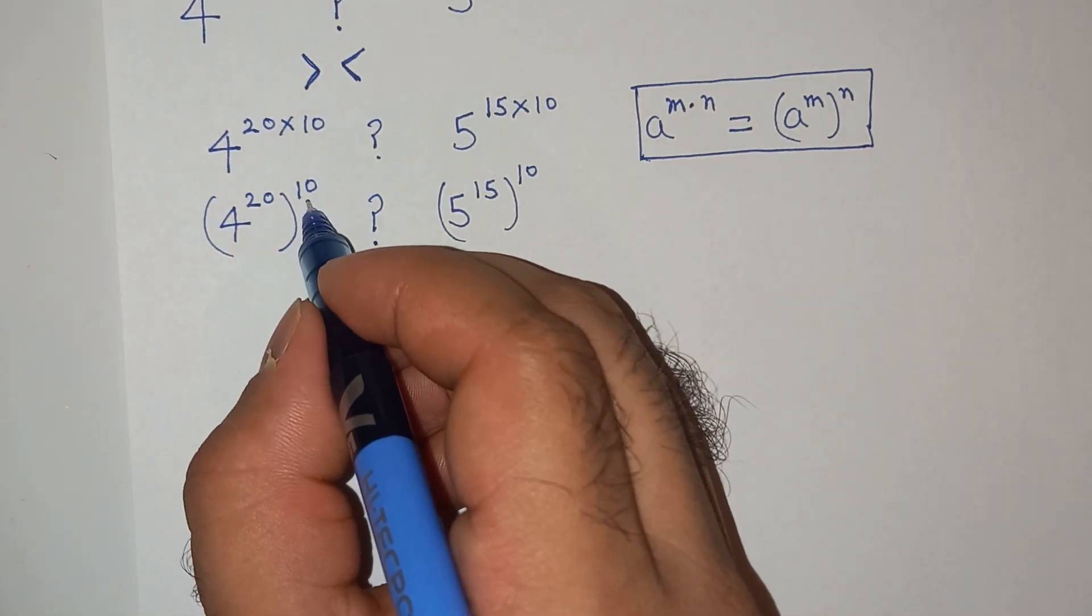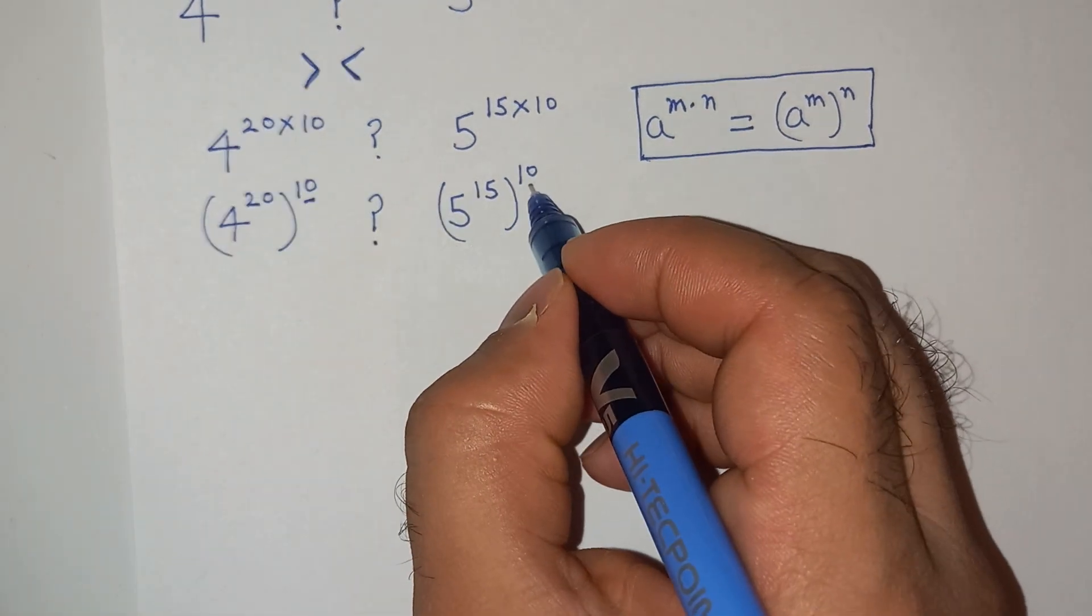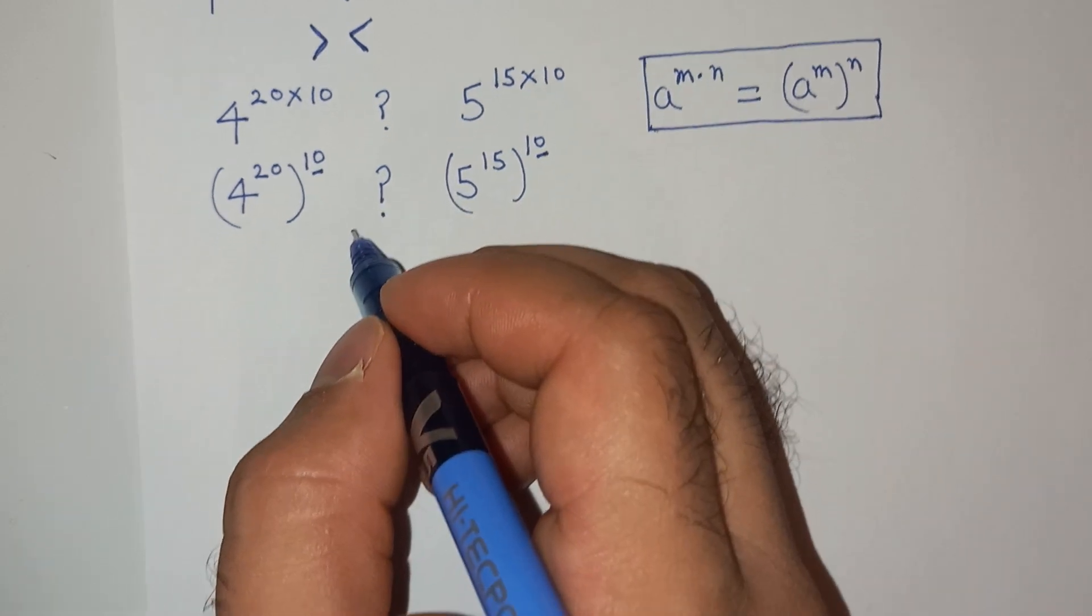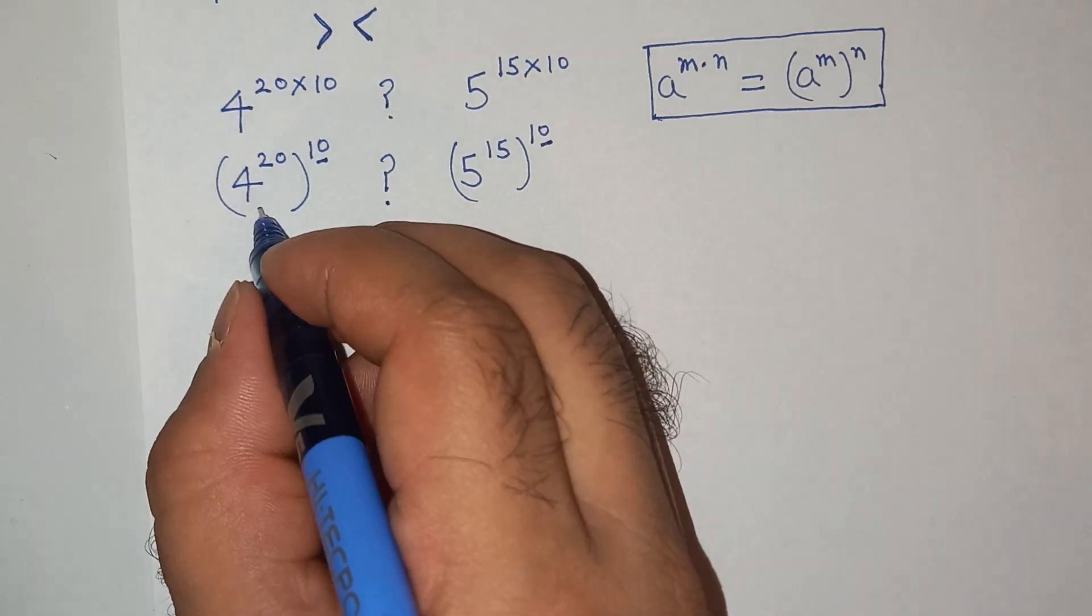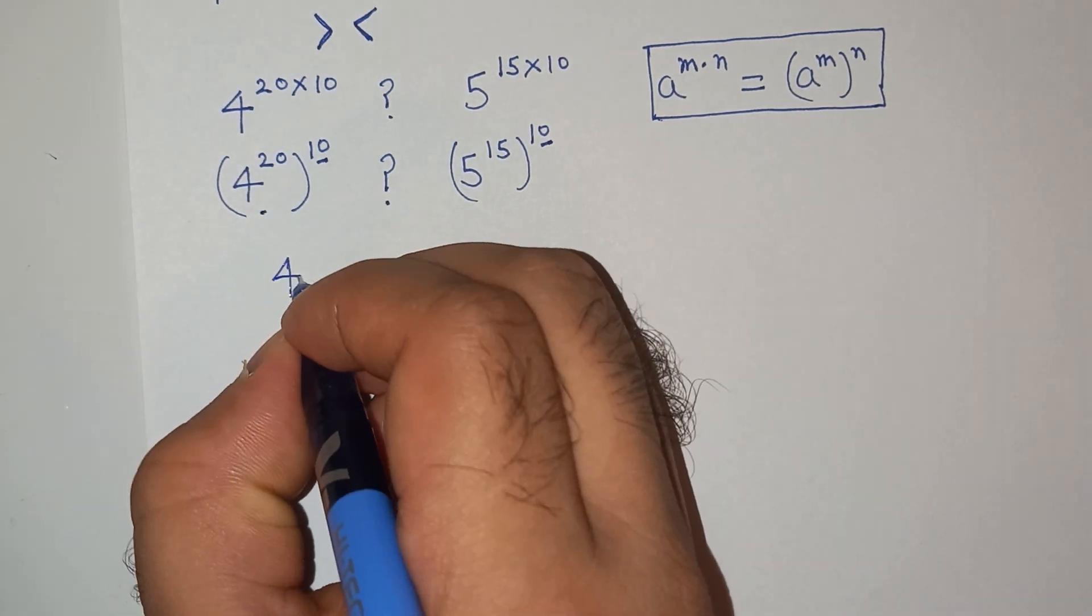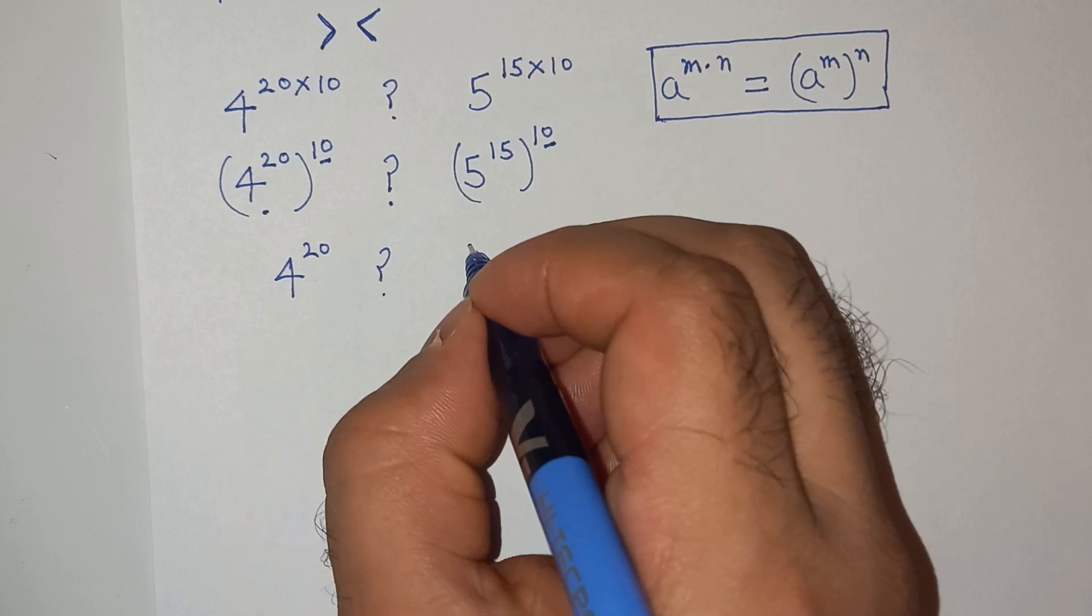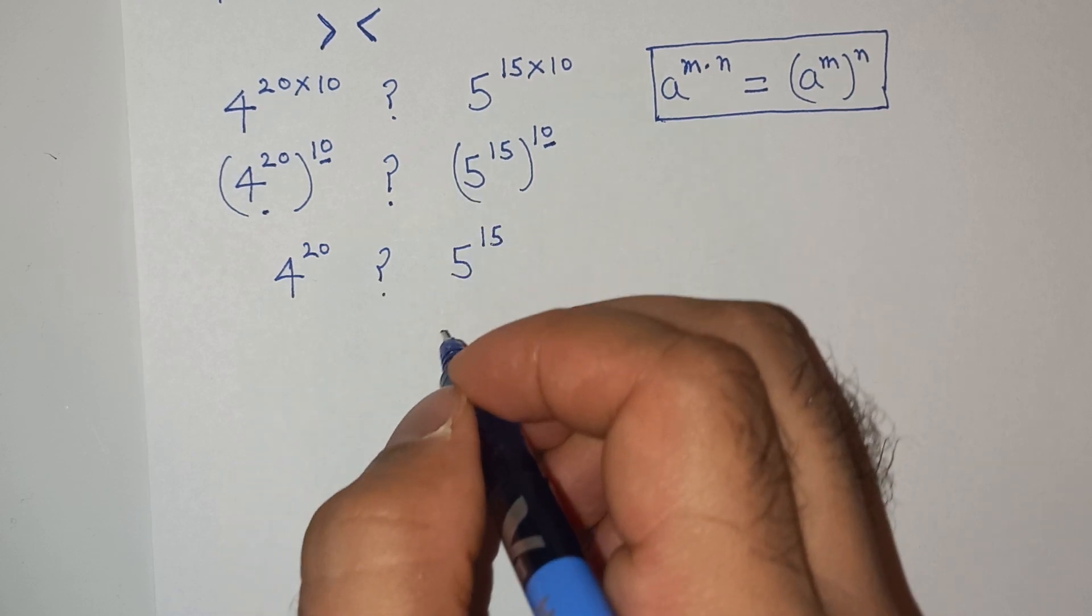Now you can see that this exponent 10 and this 10 on left hand side and one on right hand side are same. So we have to find whether this term 4 power 20 is either greater or lesser than 5 power 15.